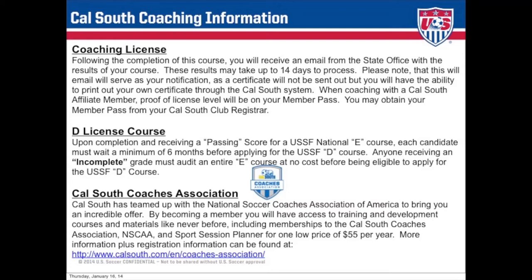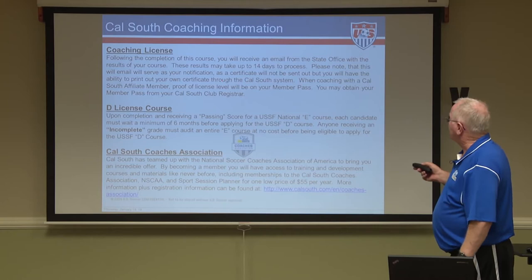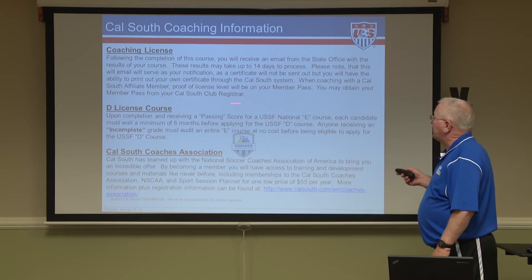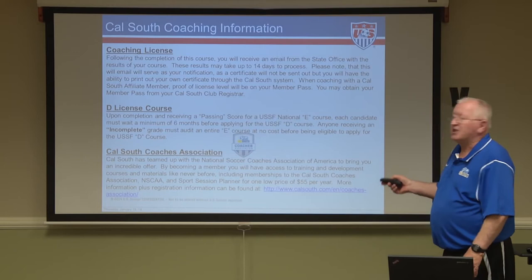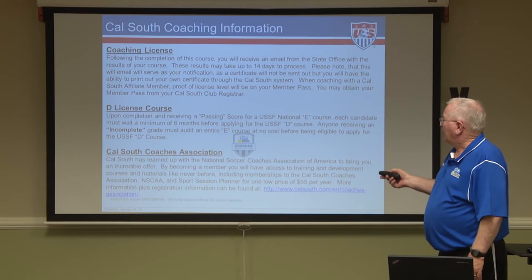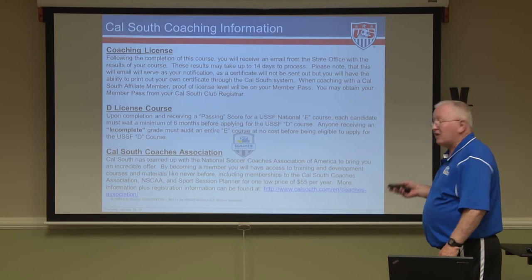CalSouth suggests that results will take up to 14 days to be processed and returned to you. You will be notified by email, and the certificate will not be sent to you, but you'll be able to print it out yourself through the CalSouth system. When coaching with a CalSouth affiliate member, proof of license will be your member pass, which you may obtain through your registrar. The D license is the next step of the licensing pathway on the road to gaining a national license — C, B, or A — with U.S. Soccer. You will have to wait six months after completing this before you can go into the D license.